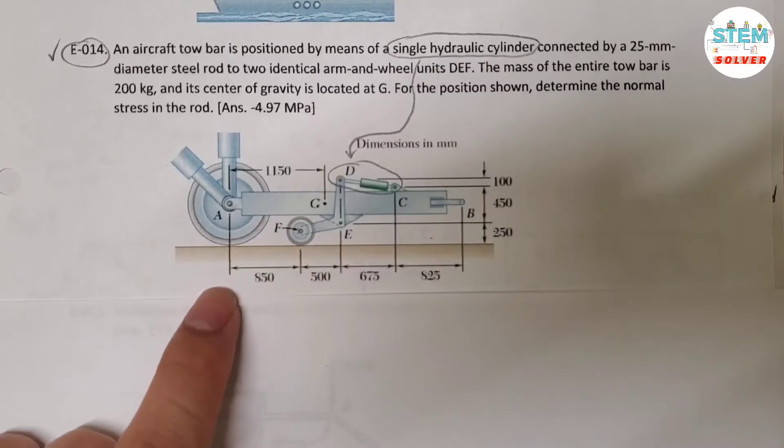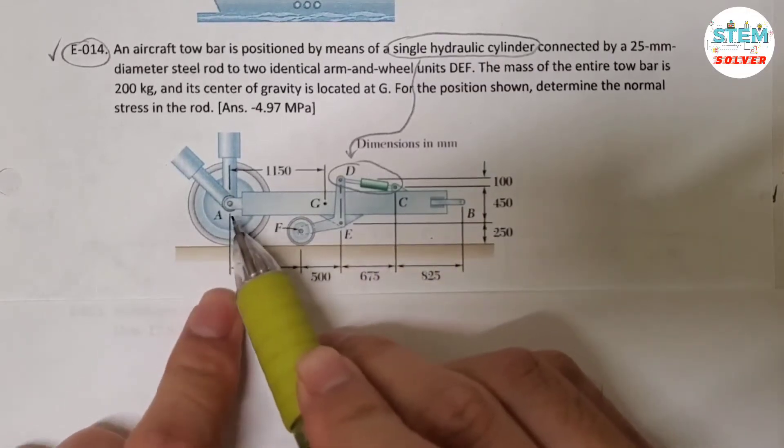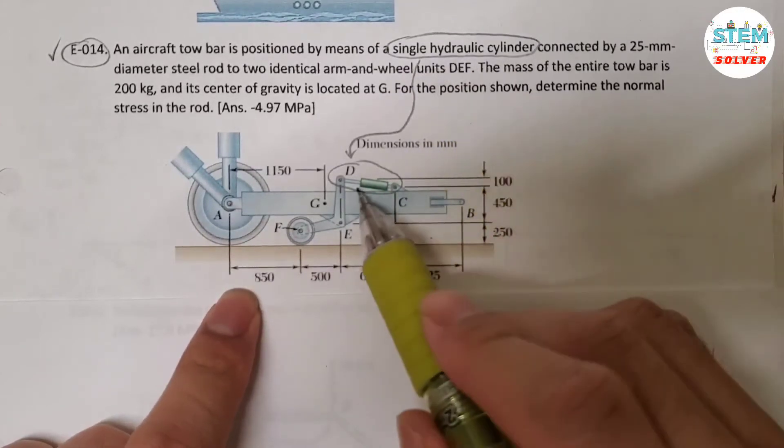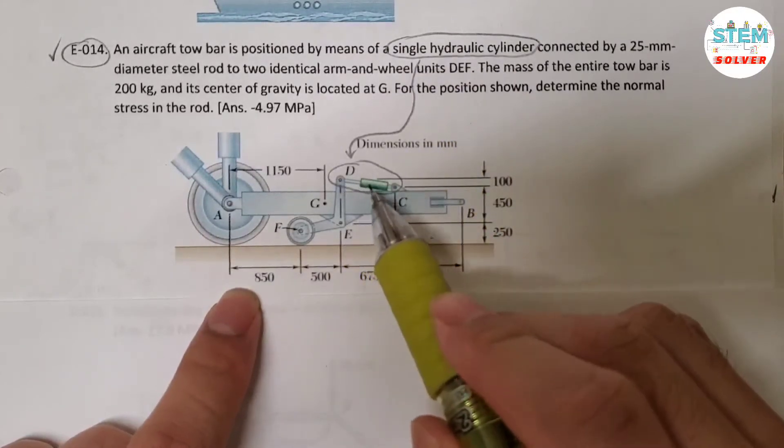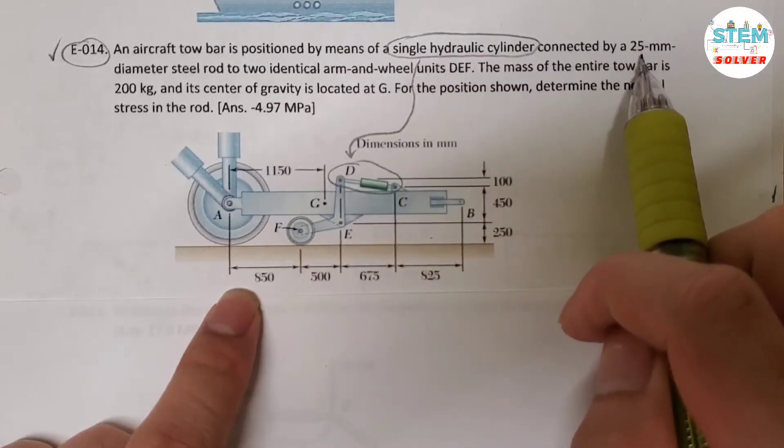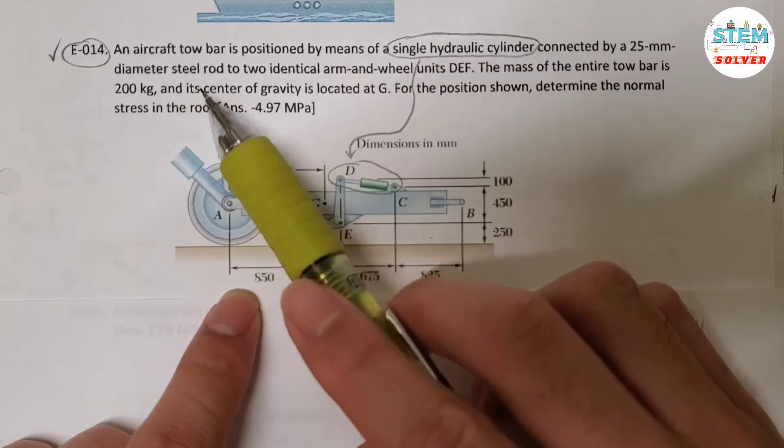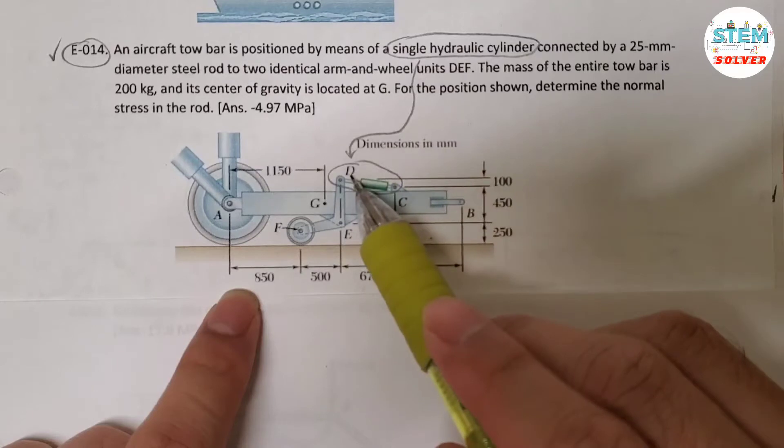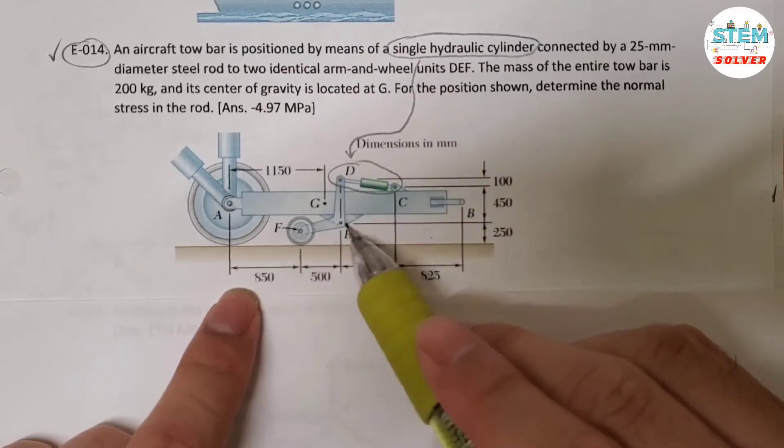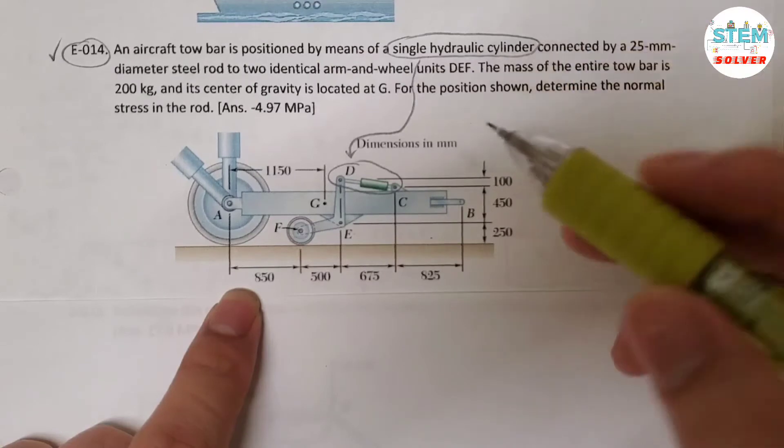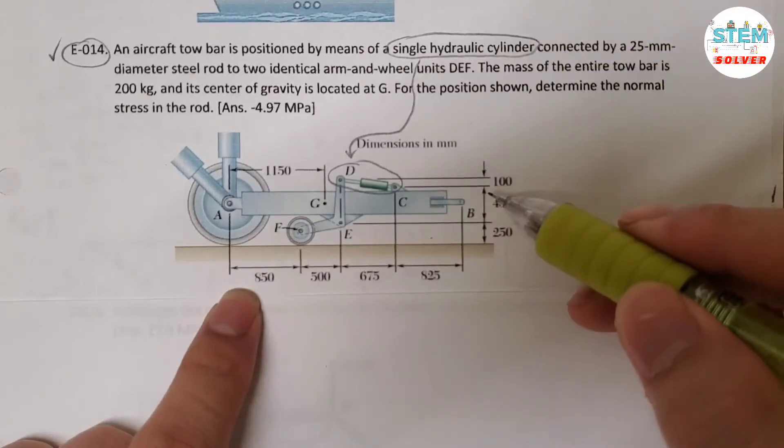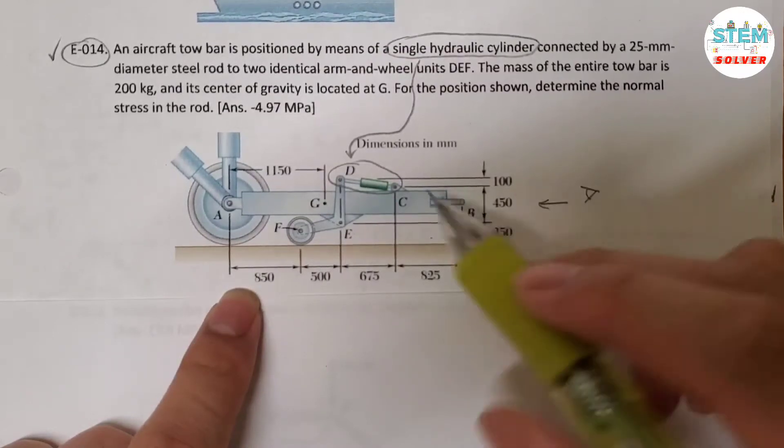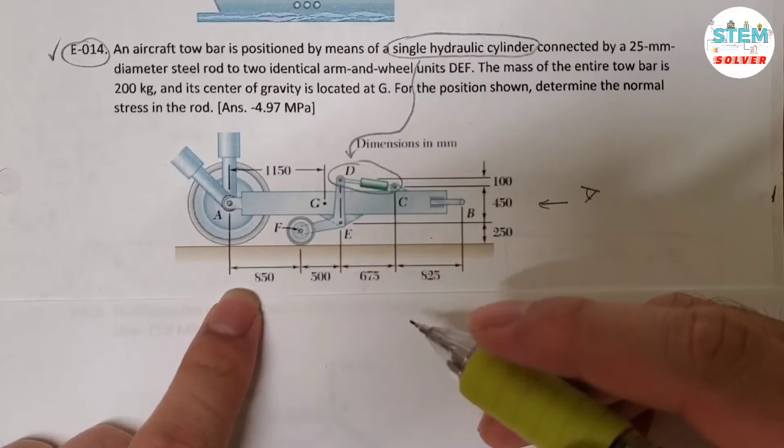So this is your aircraft tow bar. This is the wheel of the aircraft. And the single hydraulic cylinder which is this one, and it has a diameter of 25mm. So this is connected to two identical arm and wheel units DEF. So this is the side view. So you have one on this side and the other one on the other side, if you are looking this way on the top plane view.